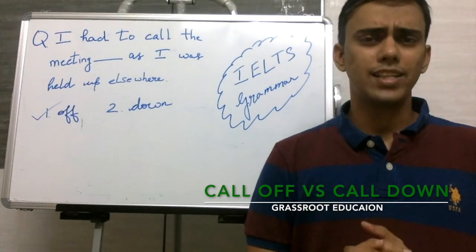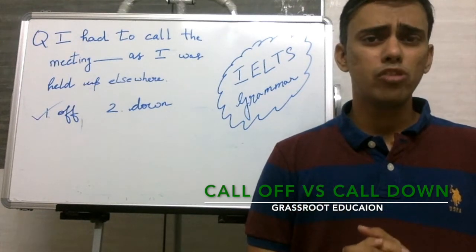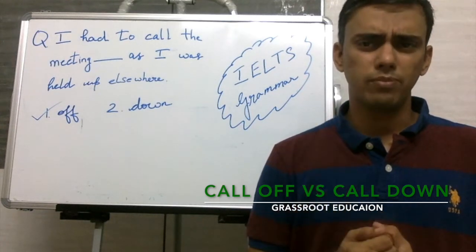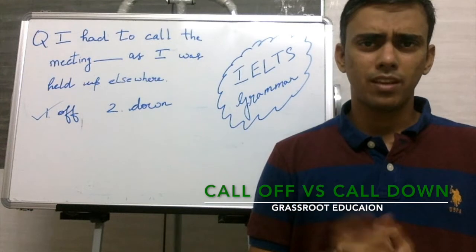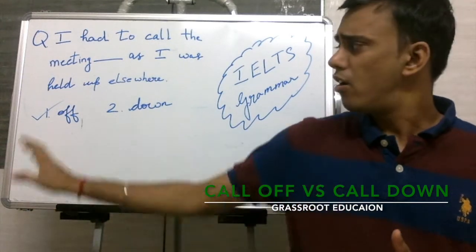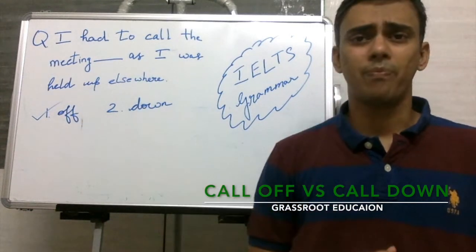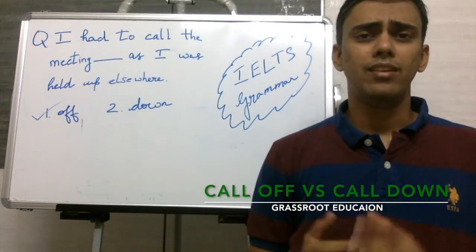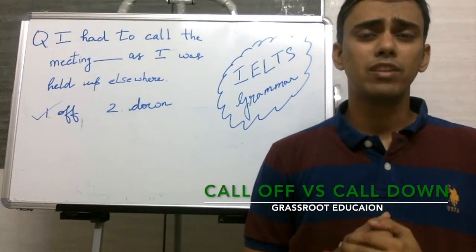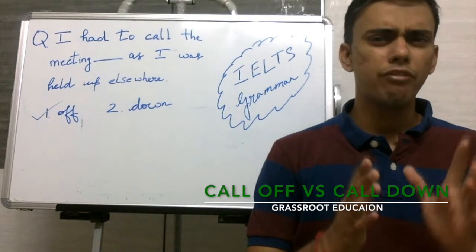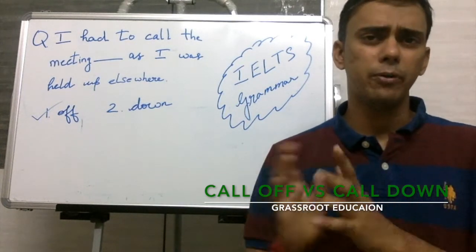In this particular lesson we are going to talk about two phrasal verbs. They are 'off' and 'down', used with the verb 'call' — call off and call down.